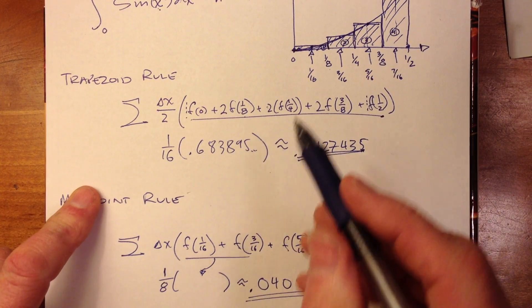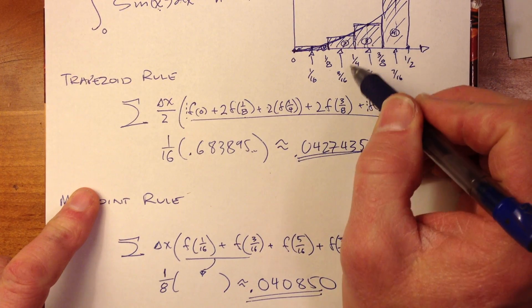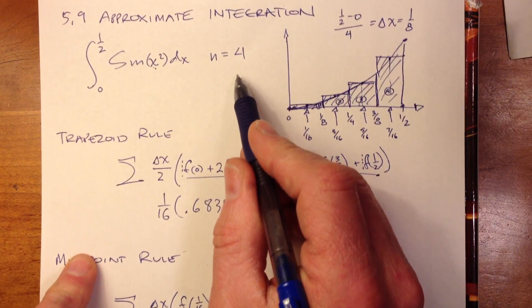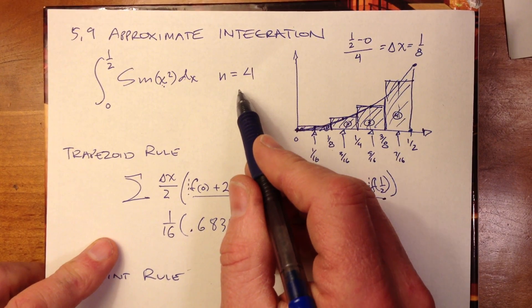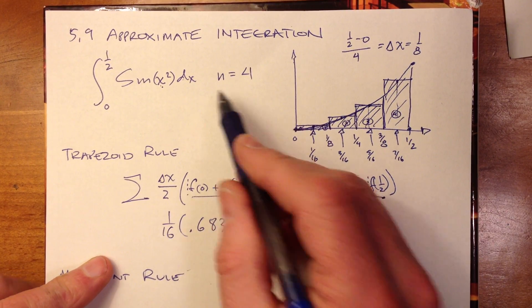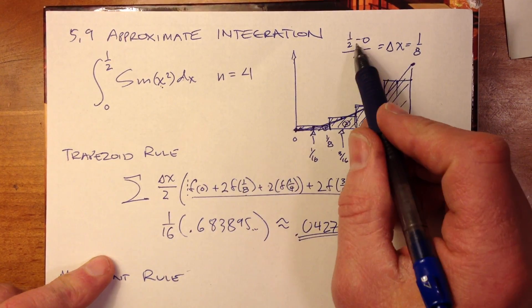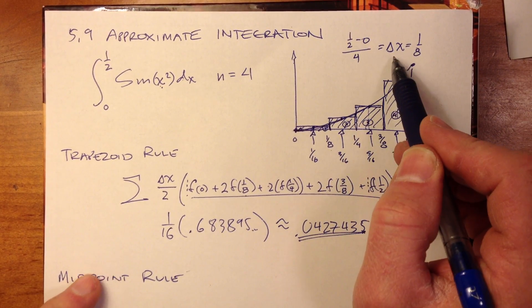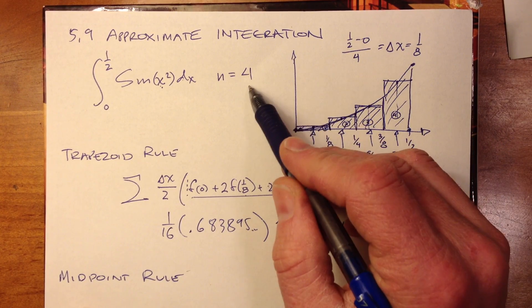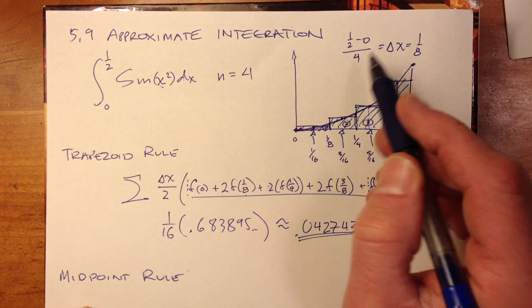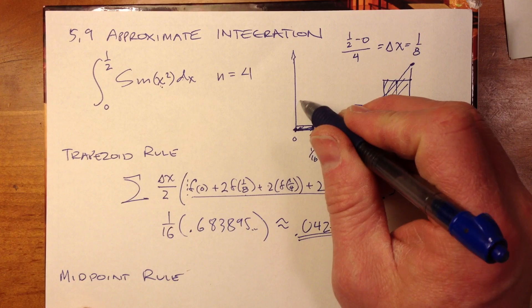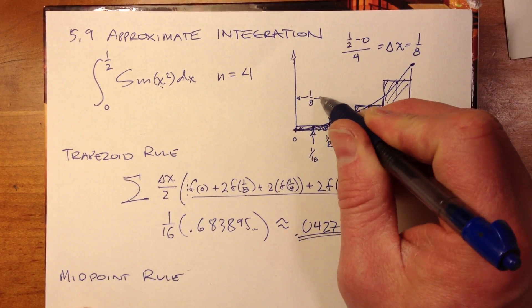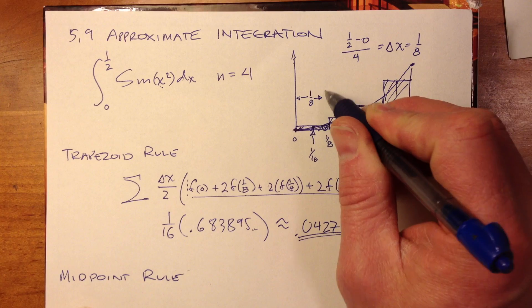For the trapezoid rule, we're joining endpoints of our subsections. We're told we have four subsections in this case, and we can find delta x by doing the upper bound minus the lower bound divided by four. So the width of each subsection is one eighth, which makes sense because four of those need to add up to one half.